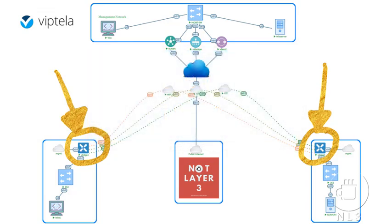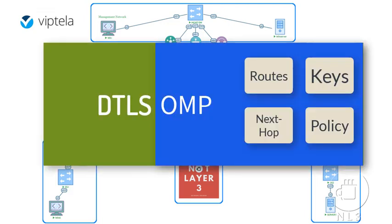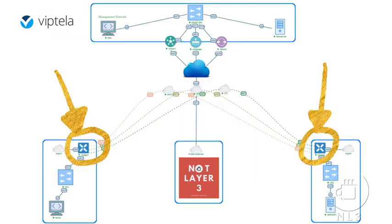The vEdge router's key component is the DTLS control plane connection. Each vEdge router has one permanent DTLS connection to each vSmart controller it talks to. This permanent connection is established after device authentication succeeds, and it carries the encrypted payload or control plane traffic between the vEdge and the vSmart controller. OMP also plays a huge role in the vEdge. OMP runs inside the DTLS connection and carries the routes, next hop, keys, and policy information needed to establish and maintain the overlay network. OMP runs between the vEdge router and the vSmart controller and is only for control plane information.